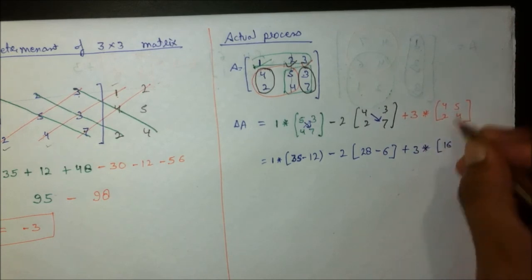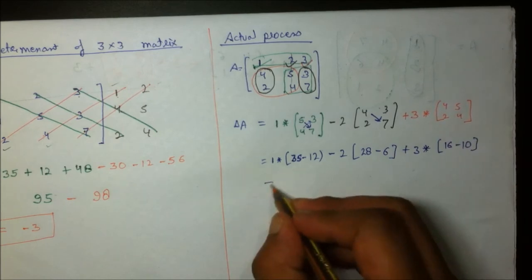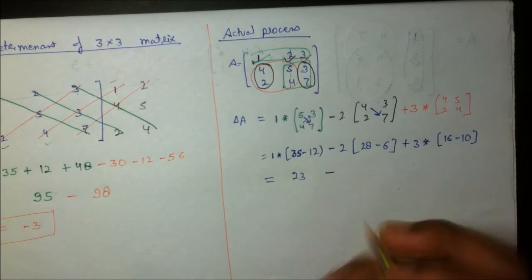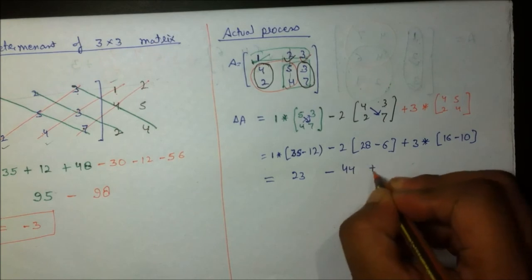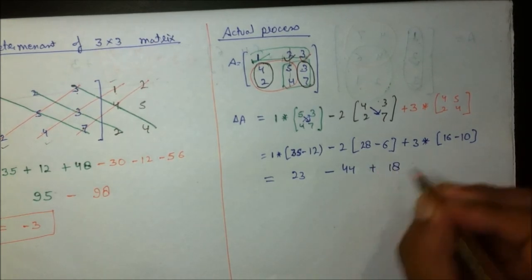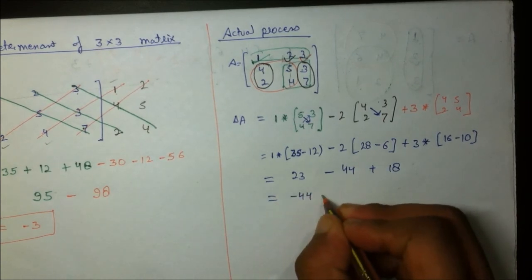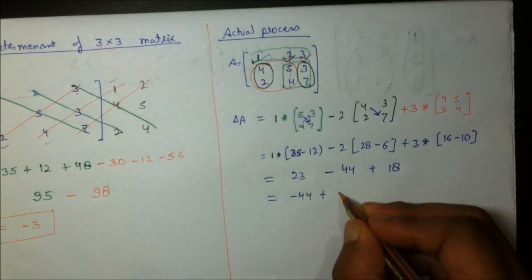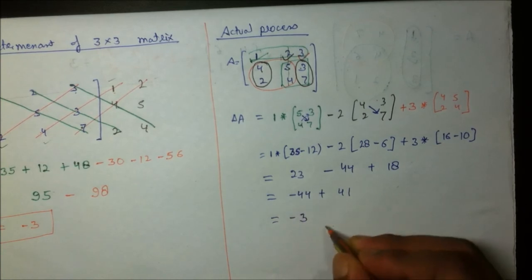For the last term: 4×4=16 minus 5×2=10, giving plus 3×(16−10) = 18. So the determinant is 23 − 44 + 18 = −3.